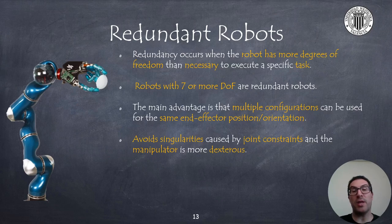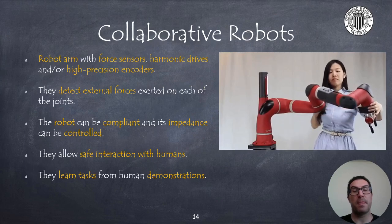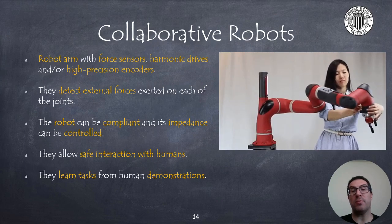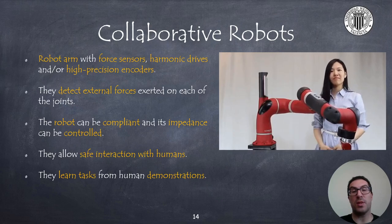The robot is more dexterous to accomplish a specific task because it has more degrees of freedom — actually more degrees of mobility. To finish this presentation, I would like to mention also collaborative robots.